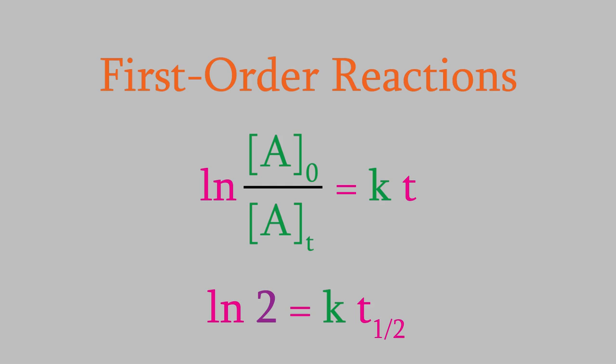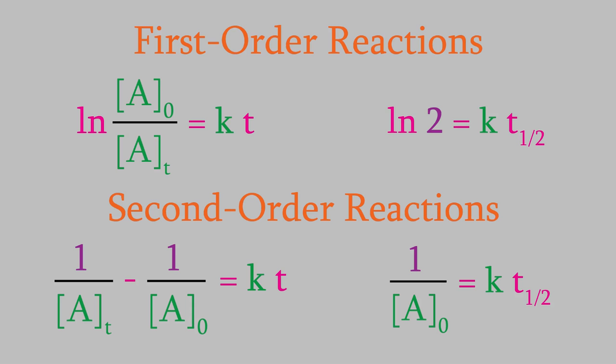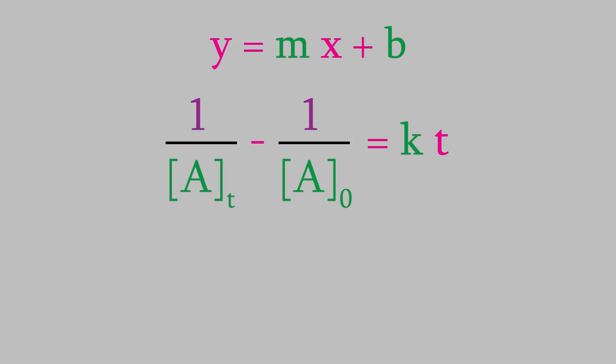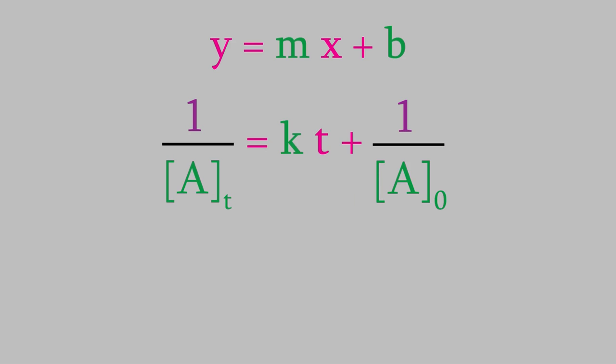So now we've looked pretty thoroughly at first order reactions. Let's move on to second order reactions. It turns out that we can also use a graph to find the rate constant of a second order reaction. Remember, a straight line has the form y equals mx plus b. Here's the equation of a second order reaction. If we move the second fraction to the right side of the equal sign, the resulting equation has the same form as the equation of a straight line.